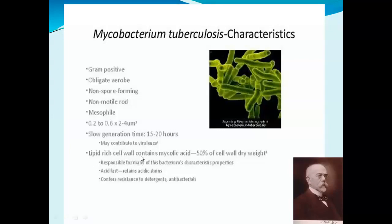The lipid-rich cell wall of Mycobacterium tuberculosis, which consists of mycolic acid, makes up about 50% of the cell wall dry weight. This is responsible for many of the bacterium's special characteristic properties. These bacteria are acid-fast, meaning they retain acidic stains, and this also confers resistance to detergents as well as antibacterials.